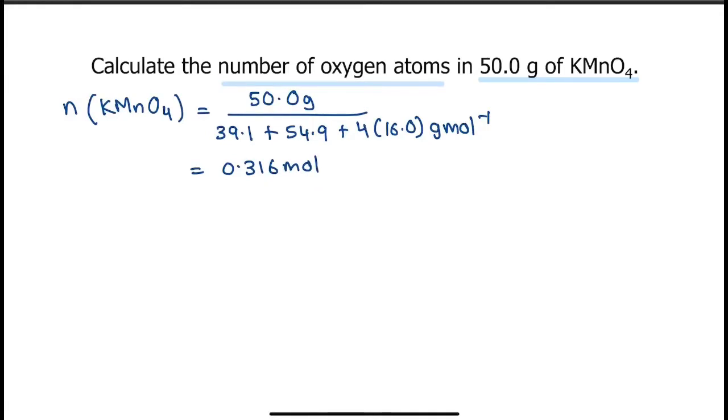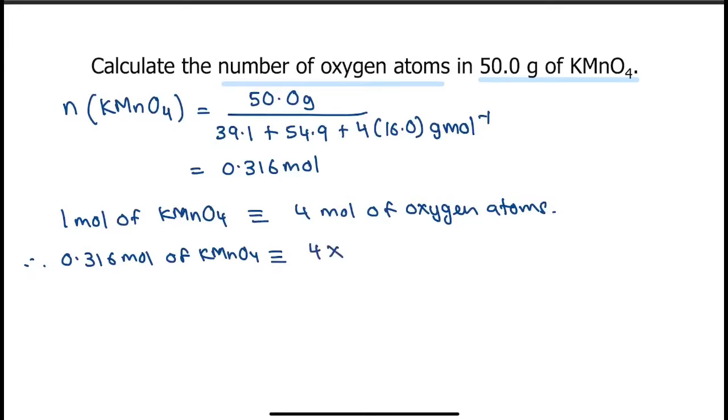Next, relate the number of moles of KMnO4 to the number of moles of oxygen atoms. That would be 1 mole of KMnO4 contains 4 moles of oxygen atoms. Therefore, 0.316 mole of KMnO4 would contain 4 times 0.316 mole of oxygen atoms. The value here would be 1.264 mole.